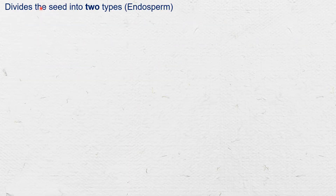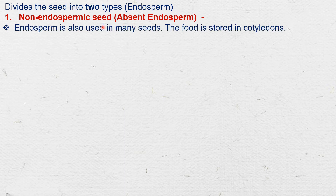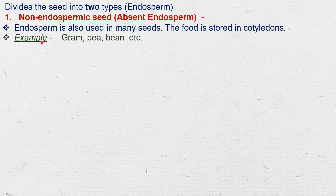Seeds are divided into two parts on the basis of endosperm. First is the non-endospermic seed, where endosperm is absent. In this seed, the food is stored in the cotyledons. The endosperm is absent at maturity — these seeds are called non-albuminous or non-endospermic seeds. For example, gram, pea, beans, etc.